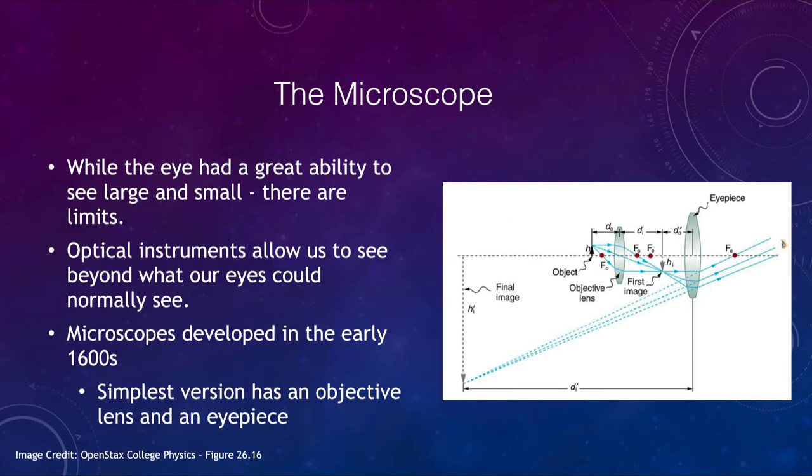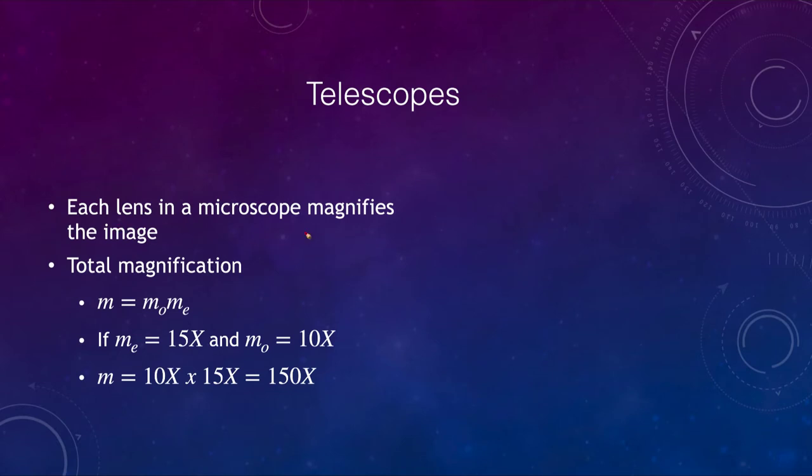How can we calculate this? Each lens does some magnification and the total magnification is the product of these two. The magnification of the microscope is the magnification of the objective multiplied by the magnification of the eyepiece. So if the eyepiece magnifies 15 times and the objective 10 times, then we multiply those together to get a total magnification of 150 times.